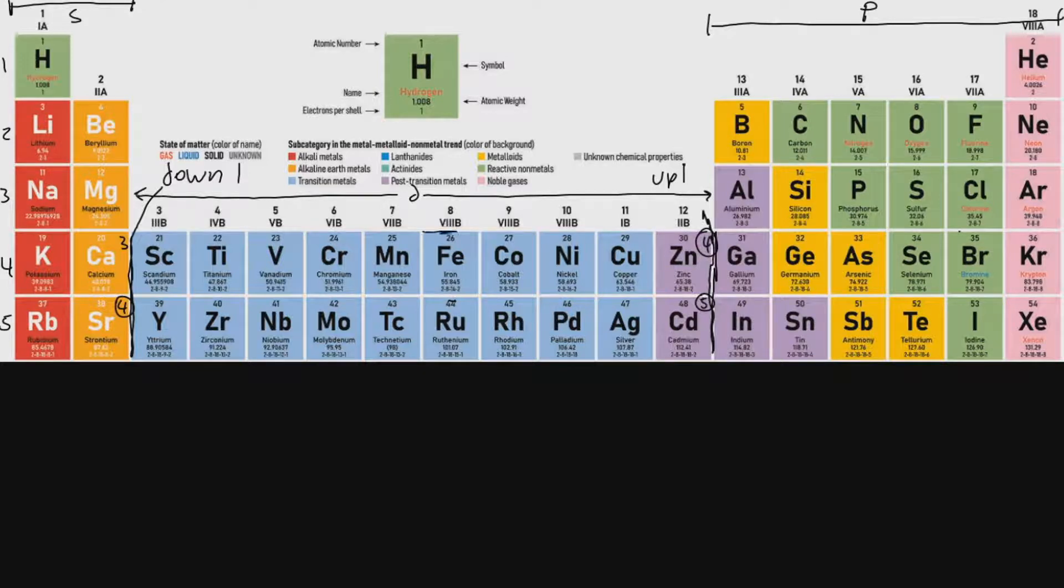Iron is located in the 3d block here on the fourth level of the table. So if we wanted to write a complete diagram we would start at the top with level 1 block s and there are two boxes. We'll say 1s2, 2s2, 2p6.